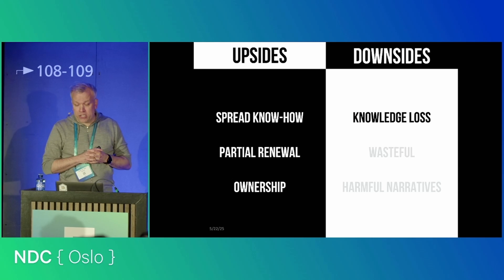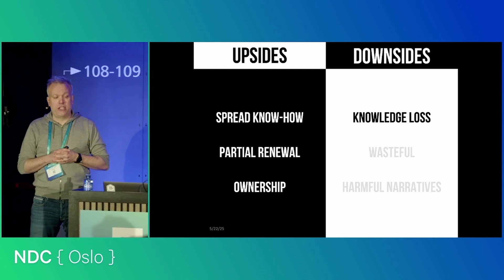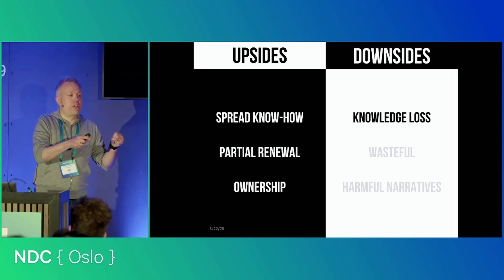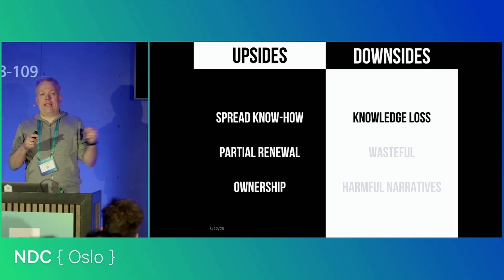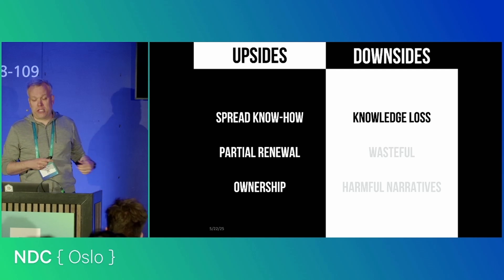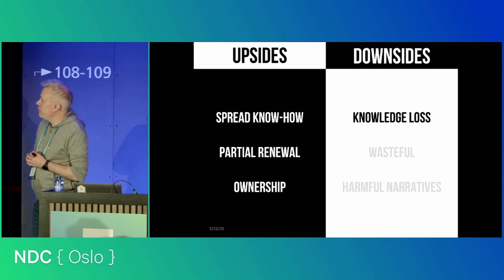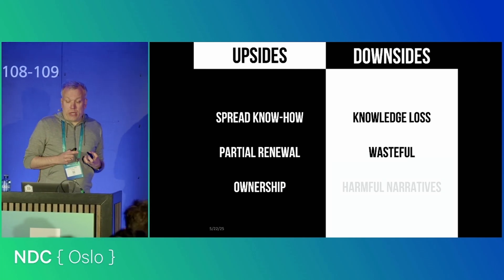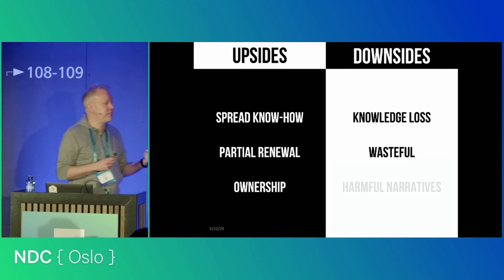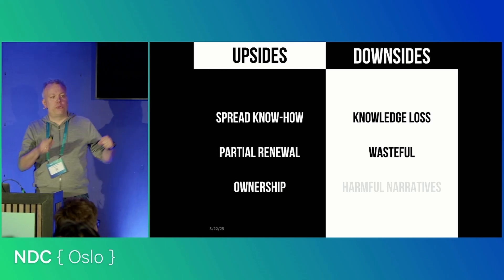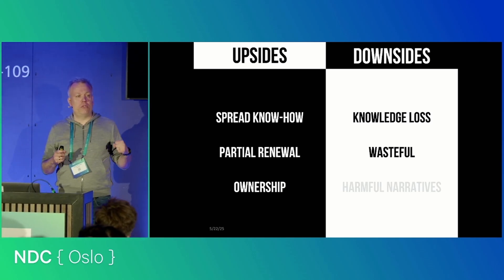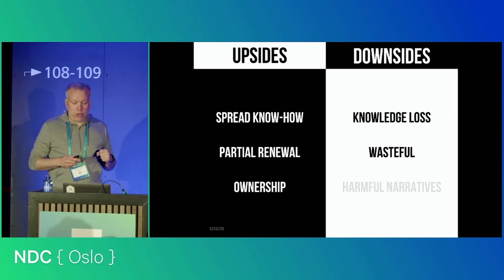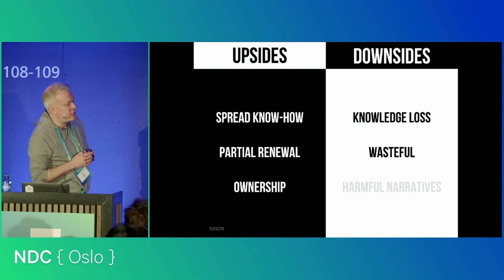On the downside, the organization loses a lot of domain knowledge, system knowledge, and history whenever people leave. So when you have a central person on your team leaving every three years, you have a giant knowledge leak. Some of that knowledge will have to be rediscovered, and some of it will just be forgotten. It's very wasteful. And also, you are trying to reshape the system when you don't really know the domain or the problem that well yet — this is when you know the least about the problem, and you may make some poor choices.